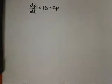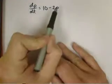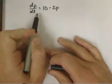In this problem we're going to find the general solution to this differential equation: dp/dt equals 10 minus 2p. We're going to do this via separation of variables.